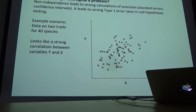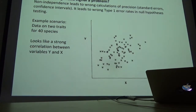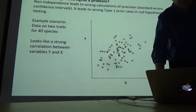Why is phylogenetic signal a problem? Non-independence in any context leads to wrong calculations of precision — standard errors, confidence intervals — and when hypothesis testing it leads to wrong type 1 error rates. Basically everything is wrong; all the methods we use in conventional data analysis can be thrown off if phylogenetic signal is present. Felsenstein in his 1985 paper — the most cited paper in the history of the journal The American Naturalist — presented a solution, and also painted a scenario to illustrate why phylogenetic signal is a problem.